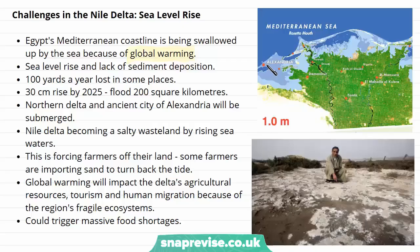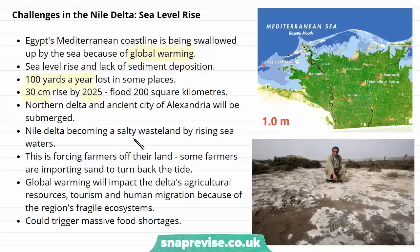As you can see, we have the town of Alexandria and also Rosetta. And in this image, where the lighter blue is now, is where the sea is going to come further inland in the future. As you can see, these towns have no chance of surviving — they're going to be completely submerged. In some places in the Nile Delta, they're already losing land at a rate of 100 yards a year, and there's a predicted 30 centimetre rise in sea level by 2025, which will flood 200 square kilometres of land in total.